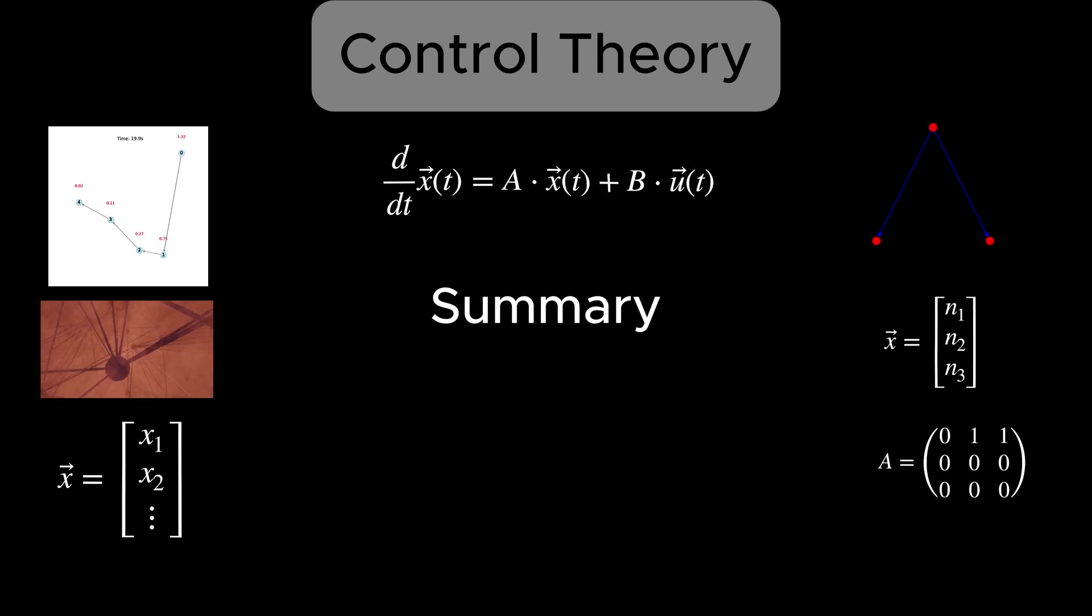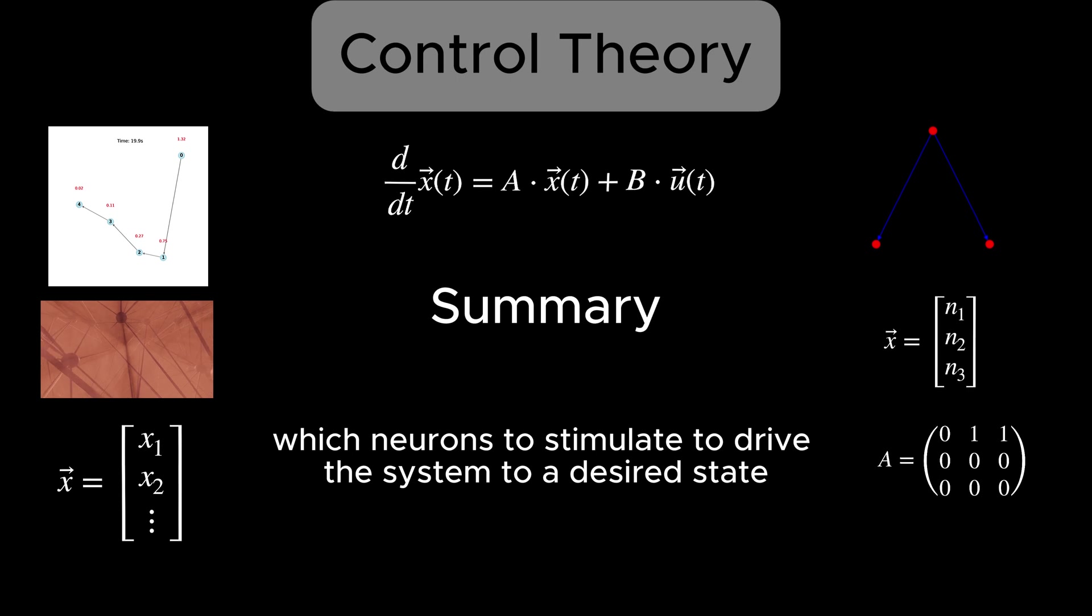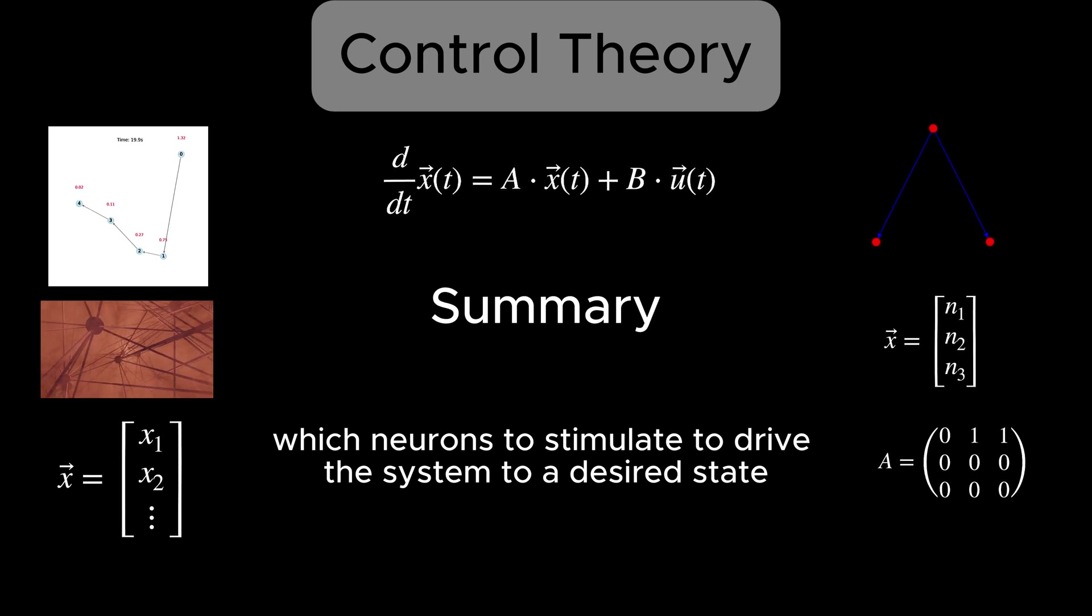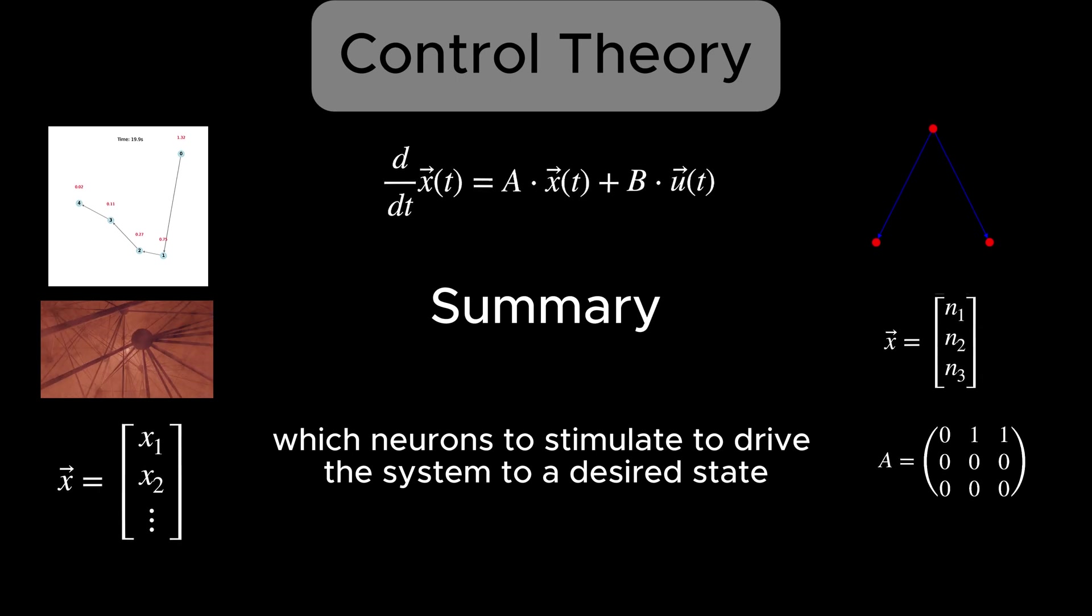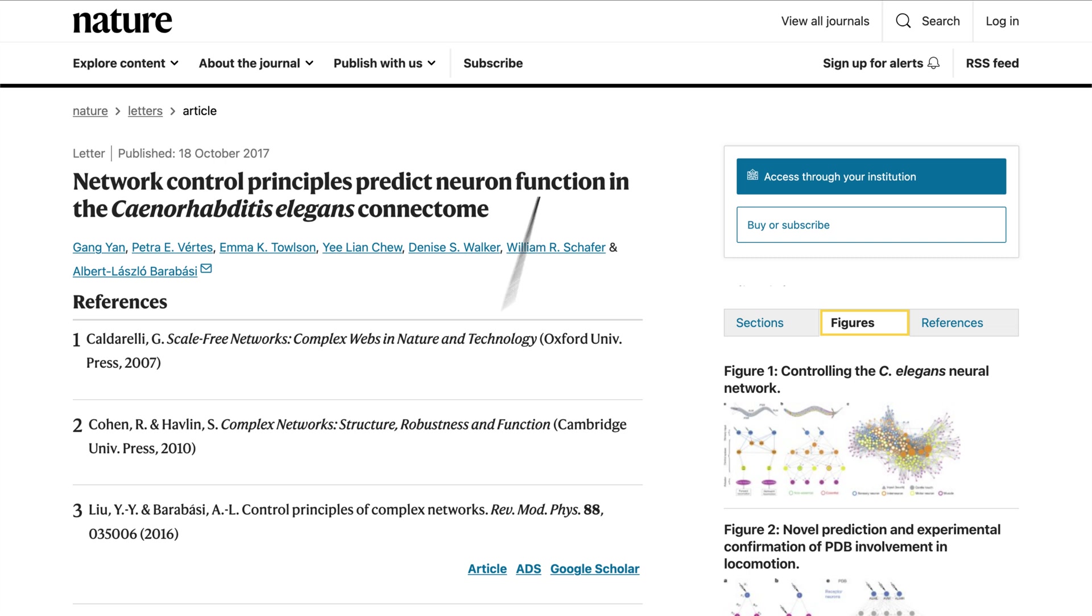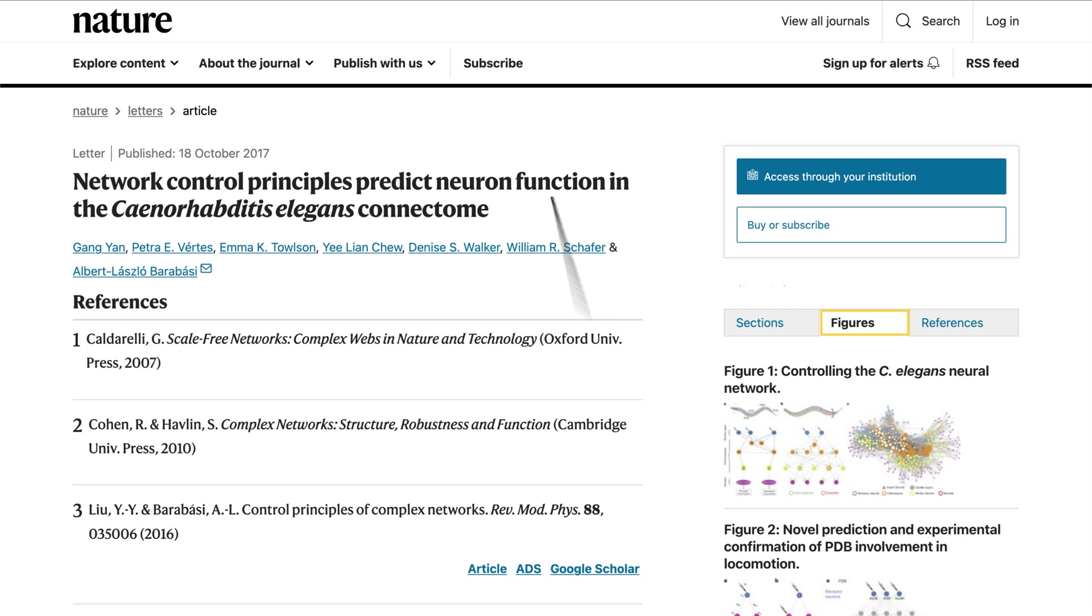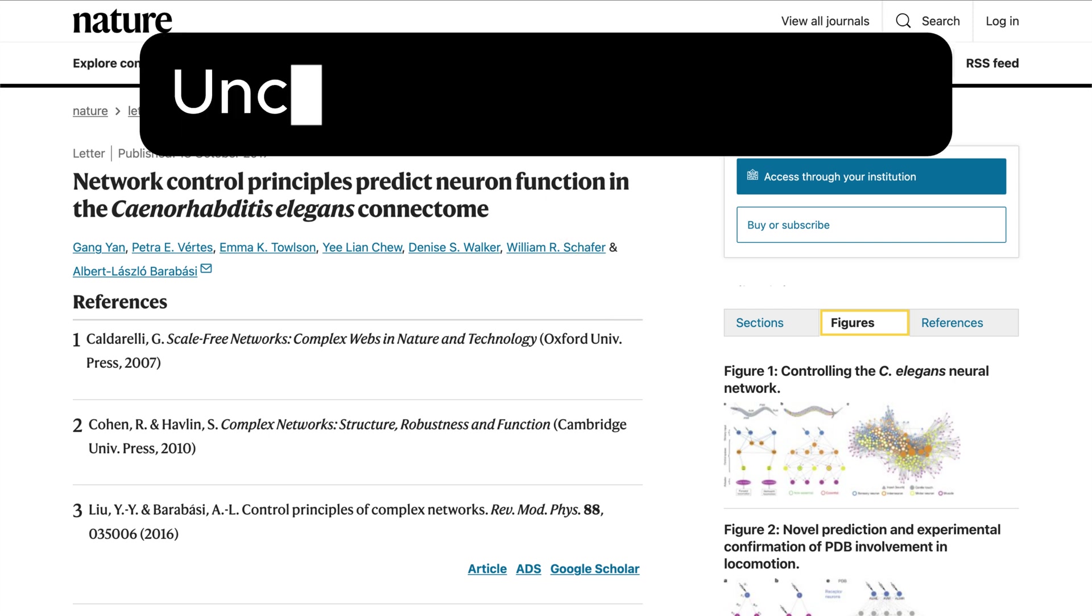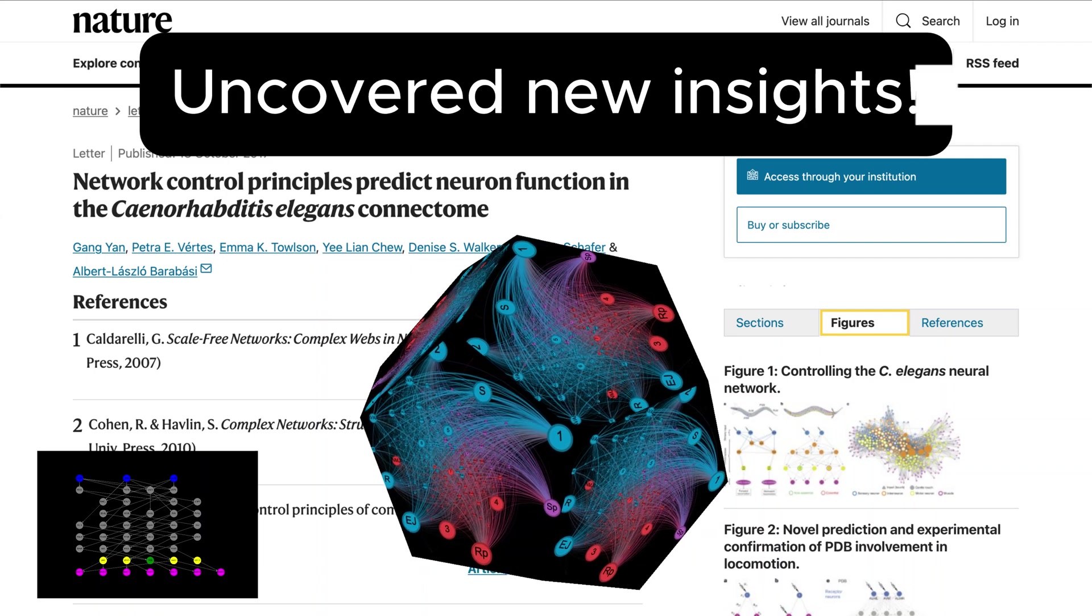In summary, control theory tells us which neurons, or nodes, need to be stimulated to drive the system to a desired state. It's like figuring out which switches to flip to light up an entire circuit. In the case of C elegans, researchers used this mathematical framework to identify neurons that play critical roles in movement. This step-by-step analysis was the key to uncovering insights that traditional methods couldn't reach.